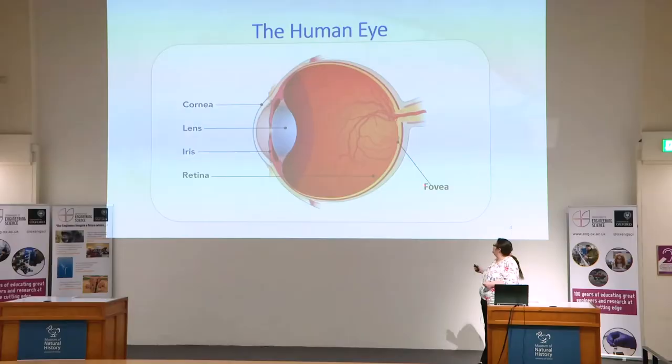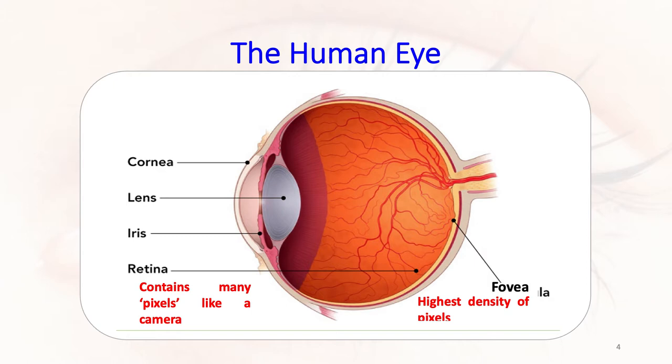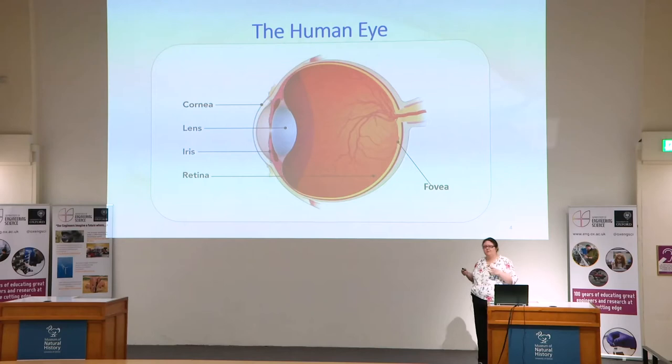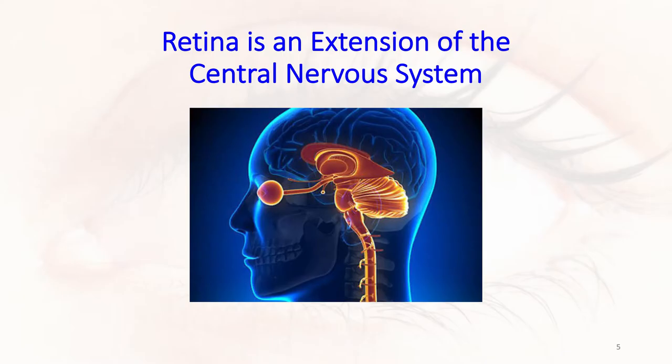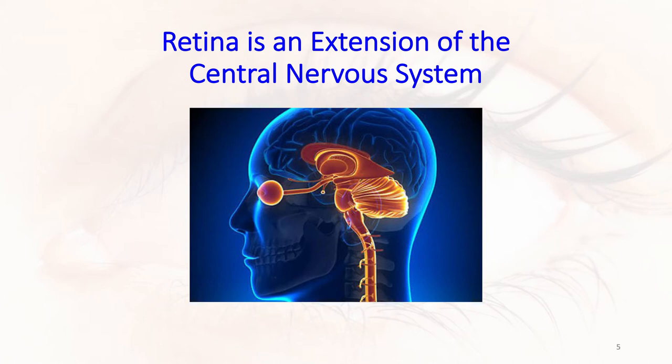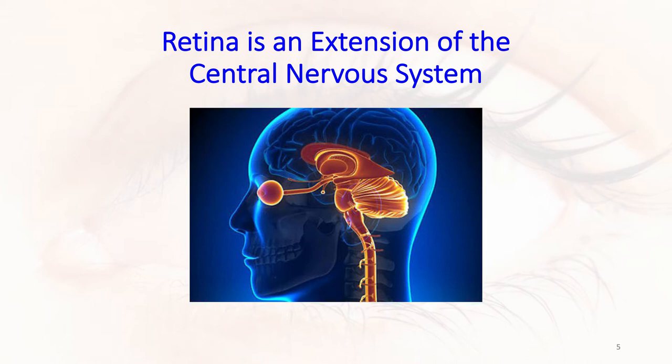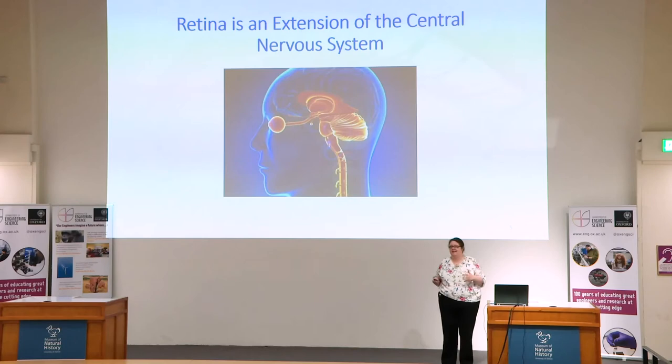The retina is the neural tissue at the back of your eye. You can think of the retina as like a camera with many, many pixels — the fovea is where your pixel density will be highest. The reason we can diagnose diseases that affect the brain using the retina is that the retina, the light-sensitive film at the back of your eye, is actually part of the central nervous system. The eye is directly connected to the brain, and there are specialised cells in the eye that project directly to areas that affect mood, cognition, memory, and circadian timing.